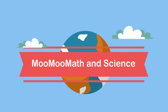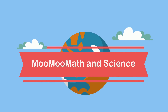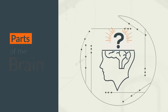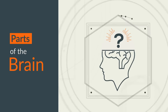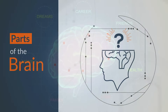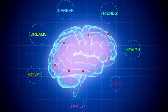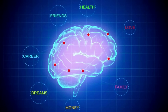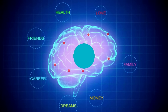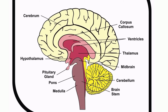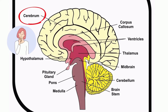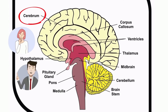Welcome to Moo Moo Math and Science and Parts of the Brain. The brain is divided into several distinct parts, each with its own specific function. The cerebrum is the largest part of the brain and is responsible for higher level functions such as thinking, reasoning, and language.